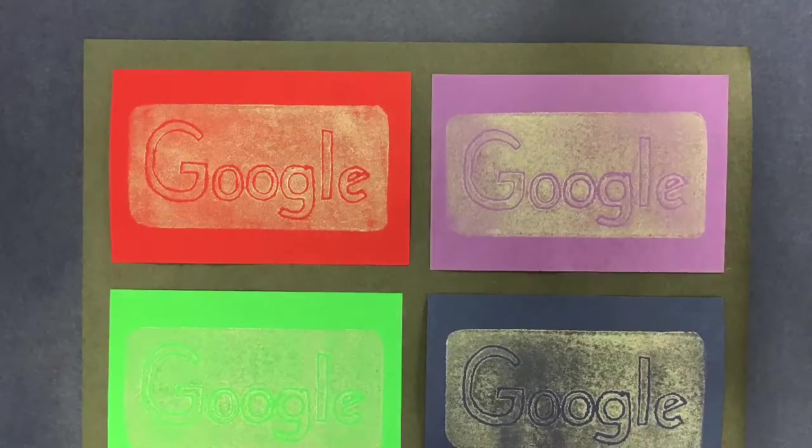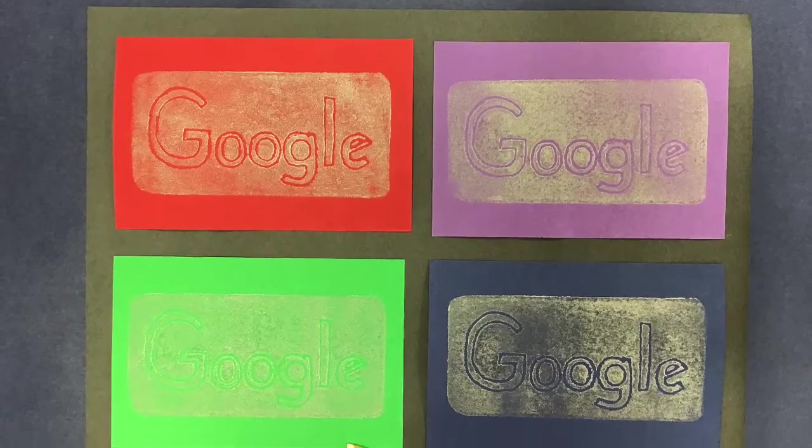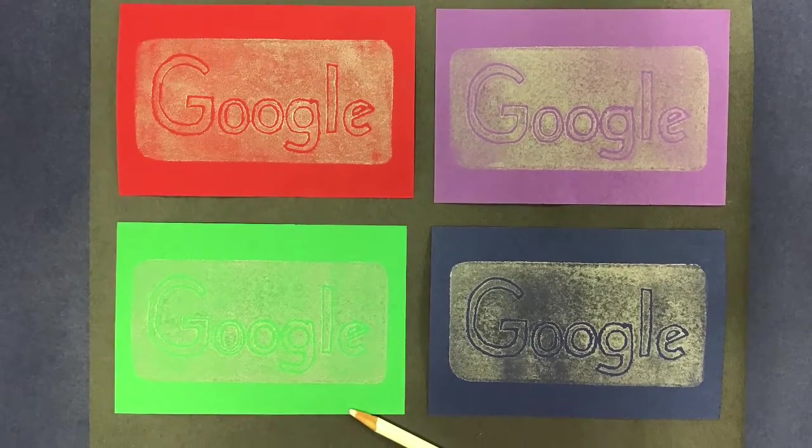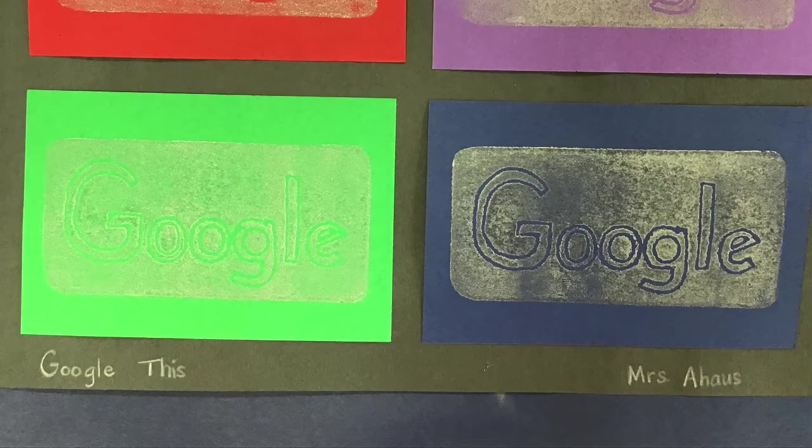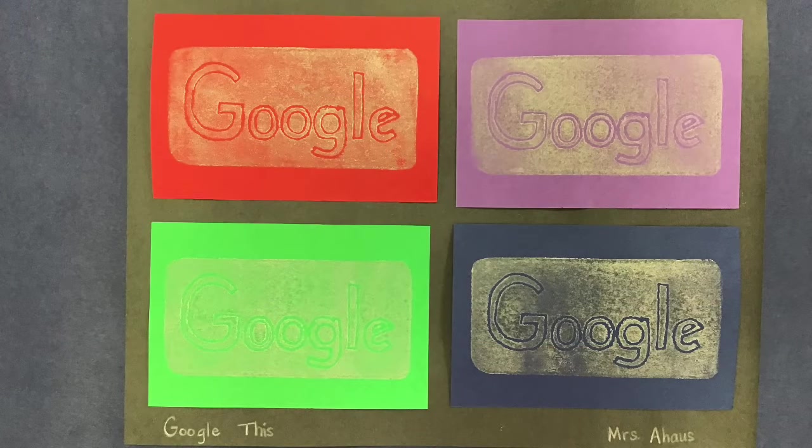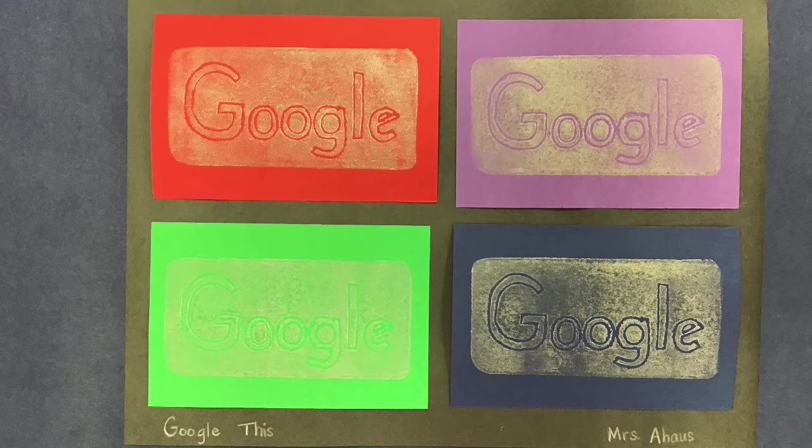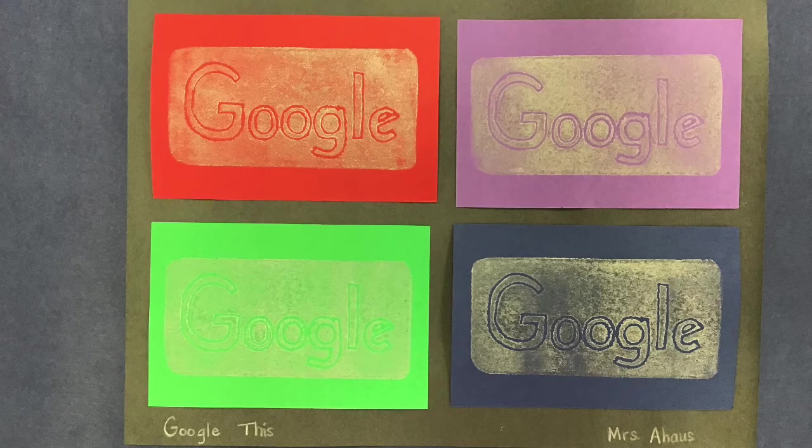On this lesson you will mount all of your dry prints onto a black paper. You're going to use white squeezy glue to do that and then with your white colored pencil you're going to give it a name and sign your own name to it. So here is your finished print. I cannot wait to see what you guys make in this project.